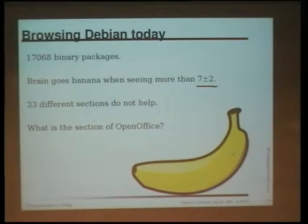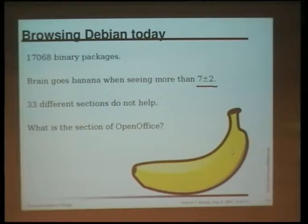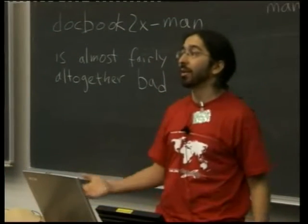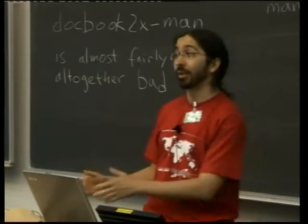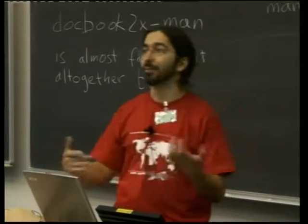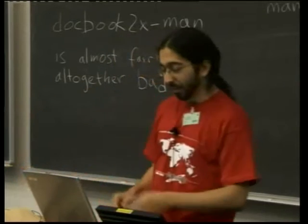We have sections — there are 33 of them, more or less — but that doesn't really help because if you divide 17,000 by 33, you still have way more than seven plus-or-minus two. And there are categorization problems: you can only have one section per package, so where do you put OpenOffice? It does pretty much everything. Or there's the problem of how to categorize a kernel driver to access a digital camera — does that go in graphics? But it's a kernel driver, so maybe it goes in admin.